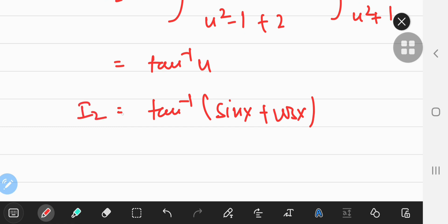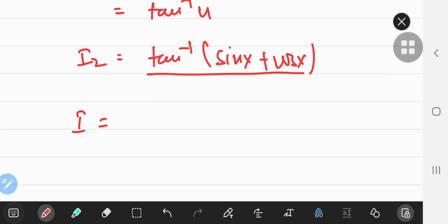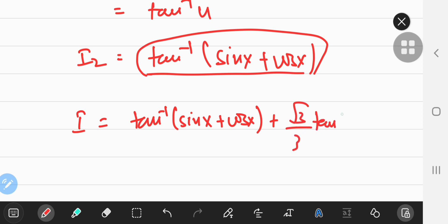So there I've evaluated both the integrals. So i equals i1 plus i2. So that's i, which was equal to i1 plus i2. So I'm just going to write the inverse tangent thing first. So inverse tangent of sine x plus cos x plus the square root 3 by 3 inverse hyperbolic tangent of sine x minus cos x.